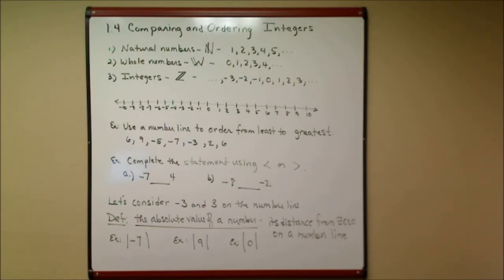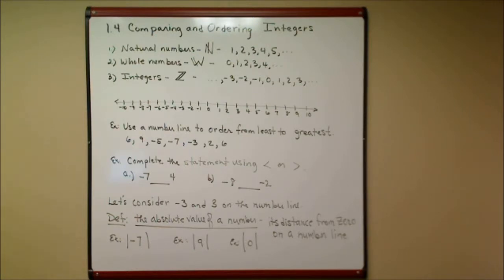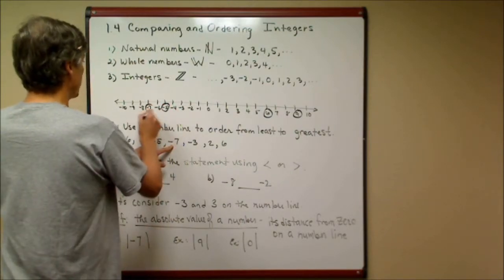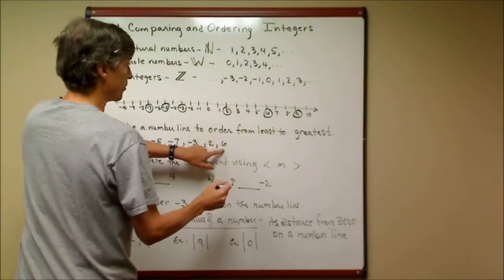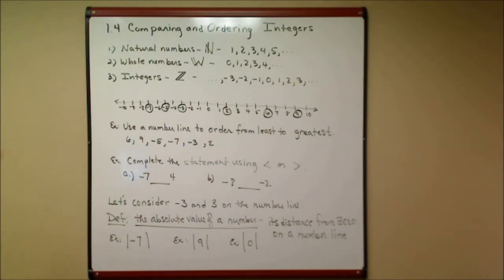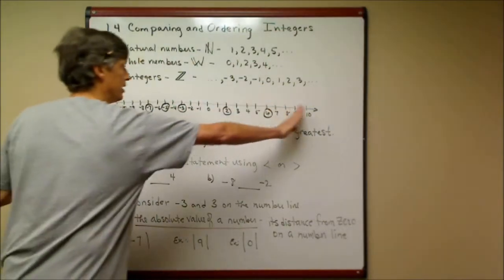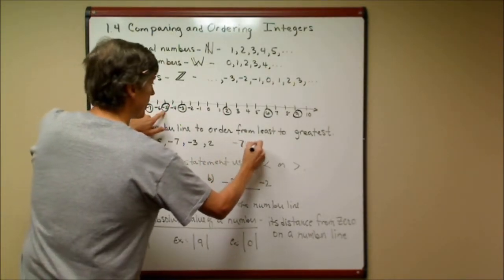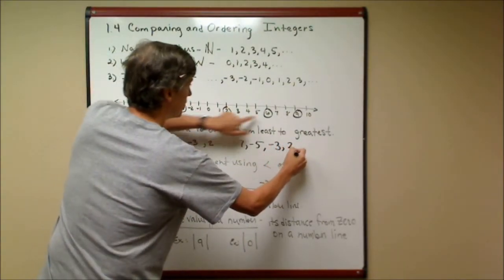Those are the numbers we normally put on the number line. The number line helps us compare which numbers are bigger and put them in a specific order. The first example is ordering from least to greatest. We have: six, nine, negative five, negative seven, negative three, two, and six. Going left to right on the number line — from least to greatest — the order is: negative seven, negative five, negative three, two, six, and nine.